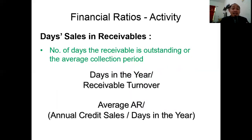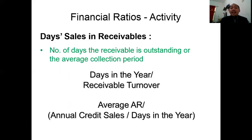Days sales in receivables is the number of days the receivable is outstanding, also known as the average collection period. The formula is: days in the year divided by receivable turnover. Alternatively, you can calculate it as average accounts receivable divided by annual credit sales, multiplied by days in the year.